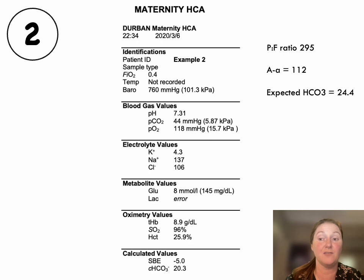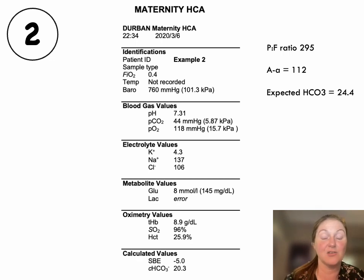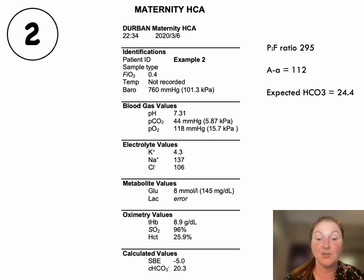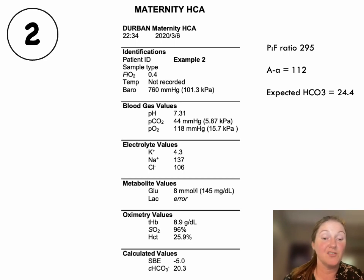Looking at the level of bicarb, it's fairly normal, pointing towards a respiratory acidosis. Calculating the expected bicarb from my cheat sheet, it's 24.4. Looking at the actual bicarb and the standardized base excess, there's a mixed picture with a slight metabolic acidosis — she lost some blood and required fluid resuscitation intraoperatively. Her Hb was 8.9, so maybe she's receiving a blood transfusion. We do want the lactate to see how she is perfusing. The glucose of 8 is expected after surgery — it is normal to have a metabolic response.